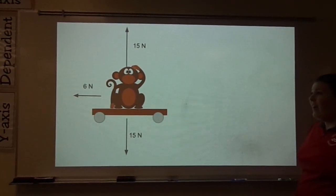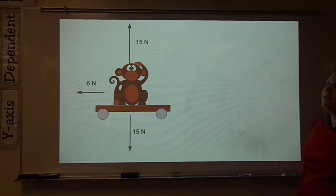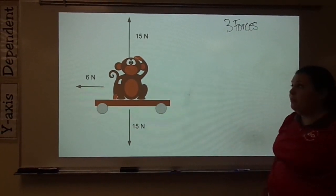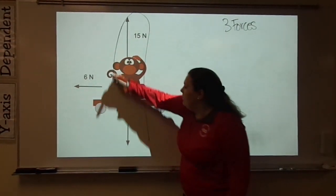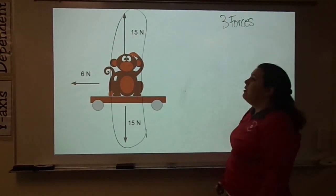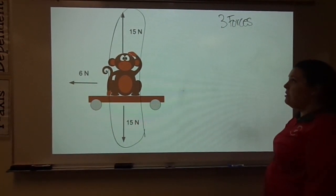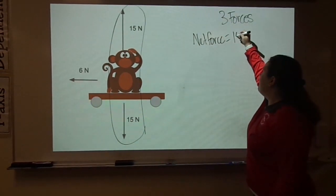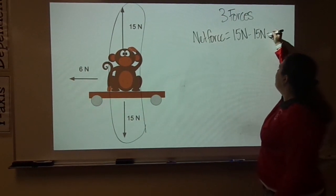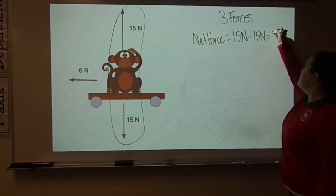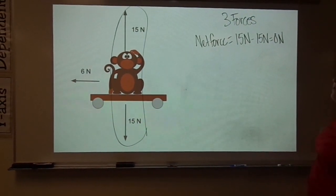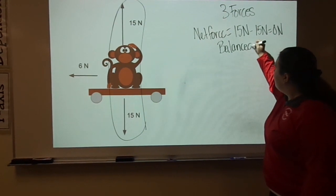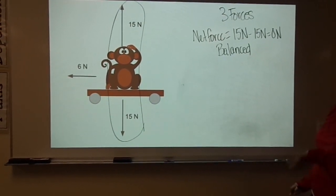Let's take a look at this free body diagram. How many forces are acting on this monkey? Hopefully you said three forces. Whenever we have more than two forces, we have to break them up — first we're going to look up and down, then left and right. Our first two forces are acting in opposite directions, so we subtract them: 15 newtons minus 15 newtons gives us a net force of 0 newtons. Whenever we have a net force of 0 newtons, we know it is balanced — those forces cancel each other out.